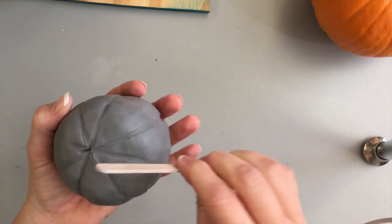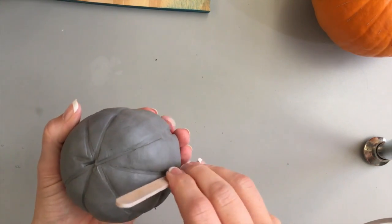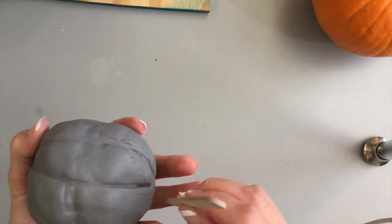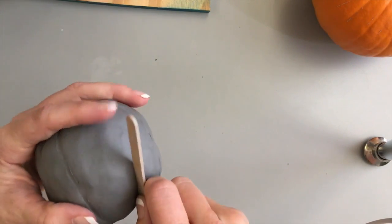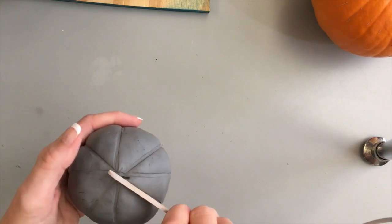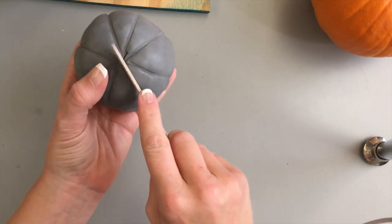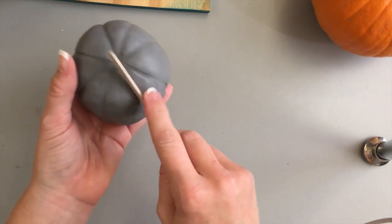And last one, roll that popsicle stick from North Pole to South Pole. Now you can go to geography class and tell your teacher that you know what a longitude line is.